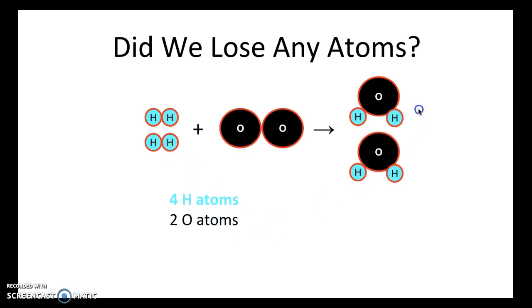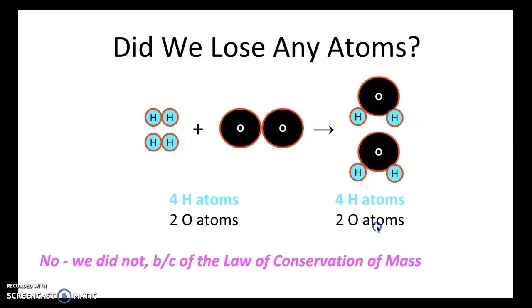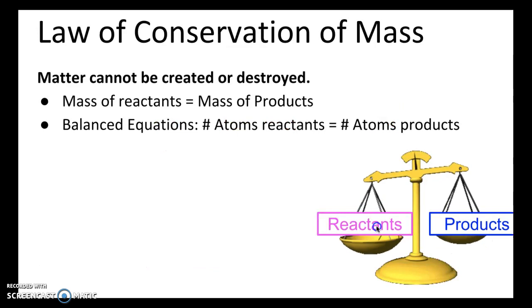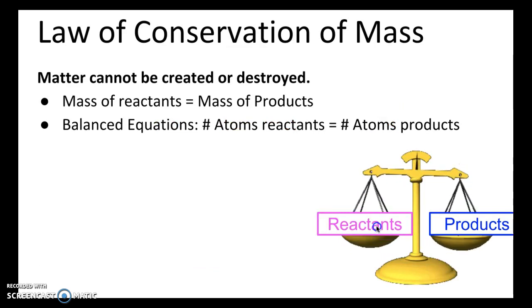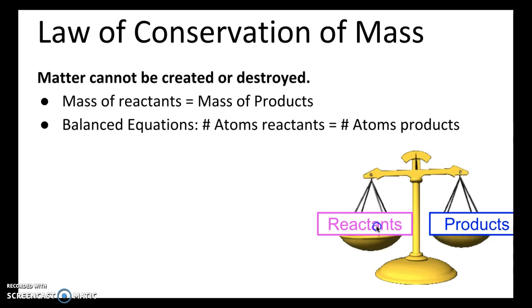Check out how many we have on the product side. We have the same amount — four hydrogen atoms and two oxygen atoms. So we didn't lose any atoms here. And that's because of something called the law of conservation of mass. It's also known as the law of conservation of matter and the law of conservation of energy, and they all mean essentially the same thing. According to the law of conservation of mass, matter cannot be created or destroyed. You can change it, but you can't make it disappear or create it out of nothing.